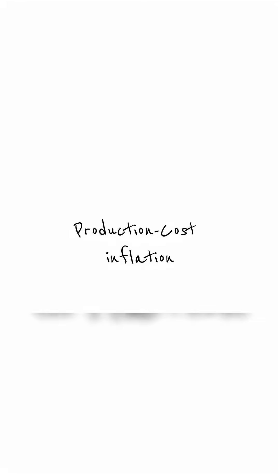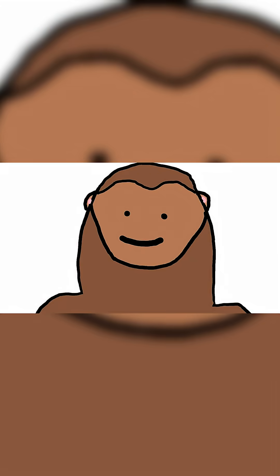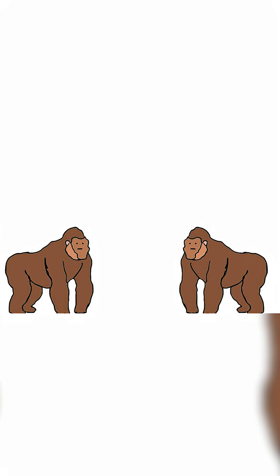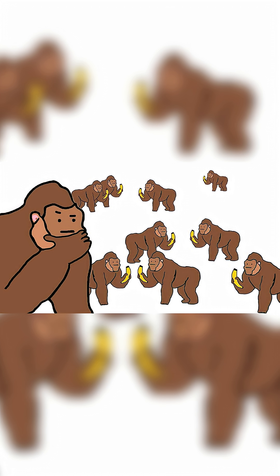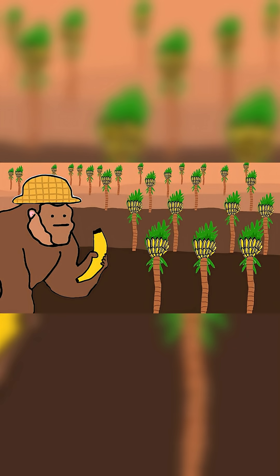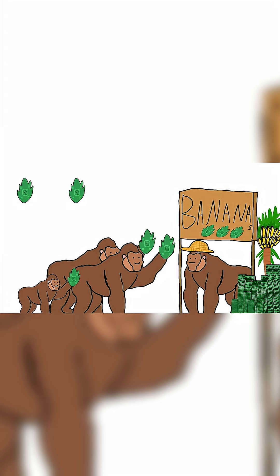That's called production-cost inflation. Monkey buys banana. Monkey eats banana. Monkey happy. Monkey tells other monkeys about banana store. Now many monkeys want banana! Banana farmer must grow more banana trees. But banana seeds now cost more. So banana farmer makes banana more expensive to pay for the seed and the work.